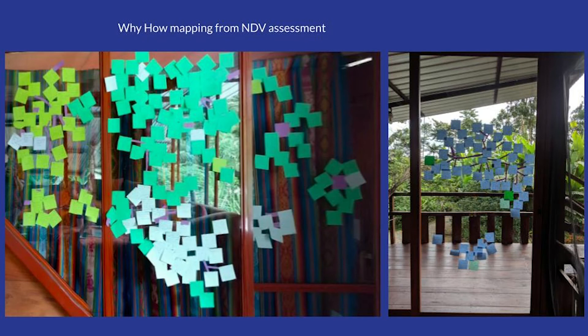Here are some photos from the 2019 Nido de Vida needs assessment why-how mapping. Each sticky note was a single needs statement, and the way they overlap describes how they interact on the why-how scale. They also color coded — every light blue sticky note had to do with community, dark green sticky notes had to do with water access, and so on. This helped them better understand how the needs overlap and interact, and the community as a whole.